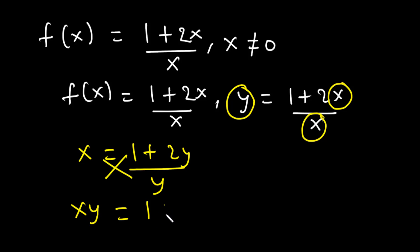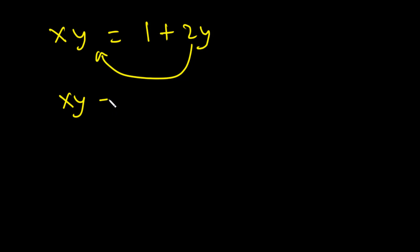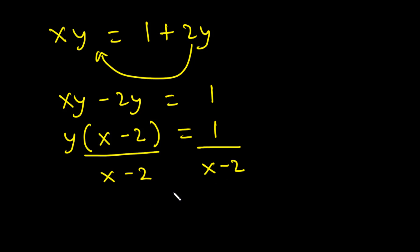We cross multiply, so xy = 1 + 2y. Because we want to make y the subject, we transpose 2y to the left-hand side: xy − 2y = 1. We factor out y, giving y(x − 2) = 1, then divide both sides by (x − 2). So y = 1 / (x − 2), which becomes the inverse of the function f(x).